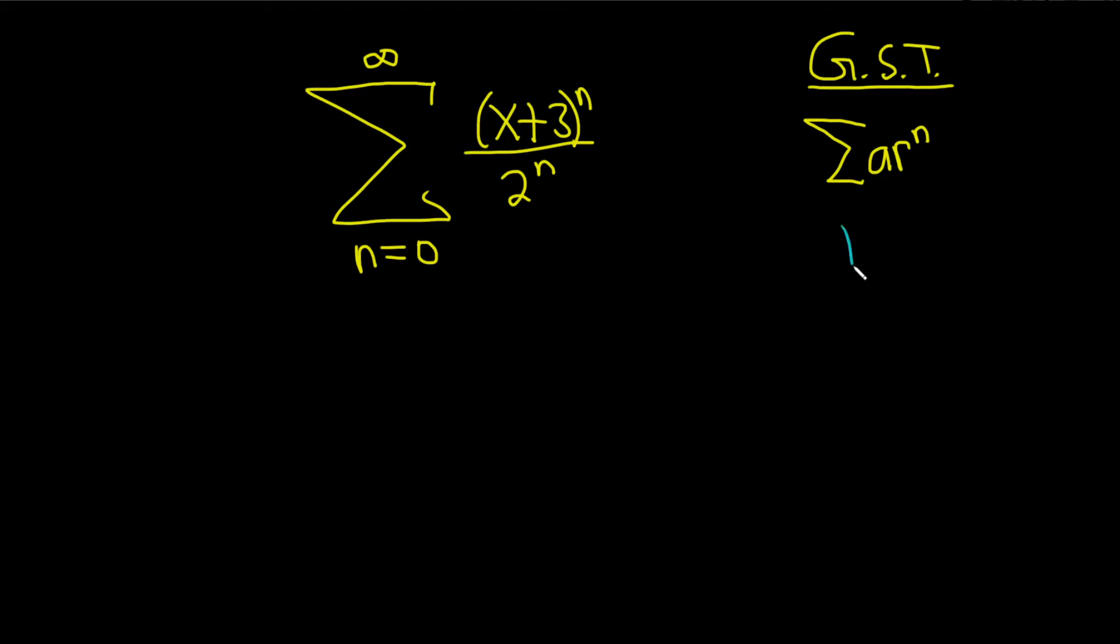The first is if the absolute value of r is less than 1, then your series will converge. So we have that the series converges.